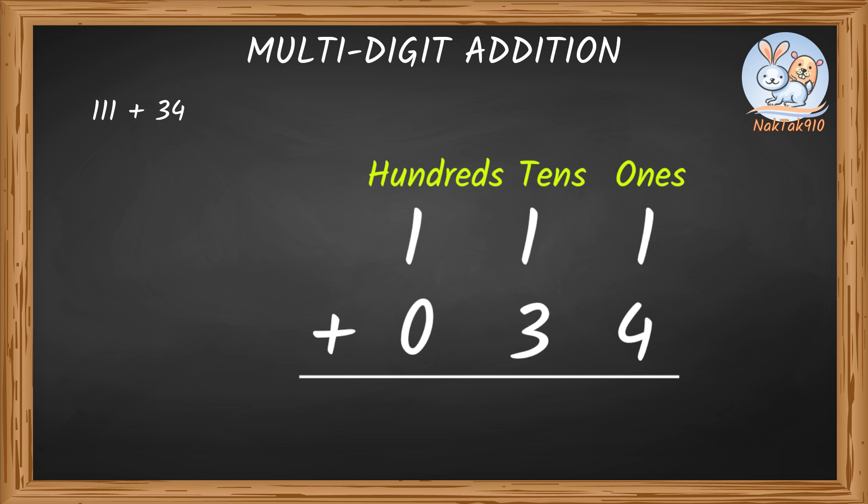Now let's start adding digits in the ones column. One plus four equals five. In the ones place. Adding the digits in the tens place. One plus three equals four. One plus zero equals one. That means... One hundred and eleven plus thirty-four equals one hundred and forty-five.